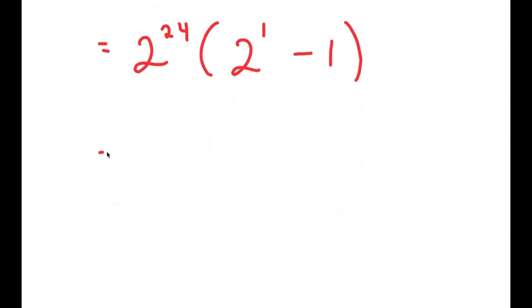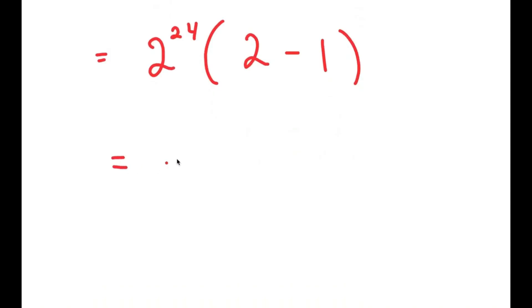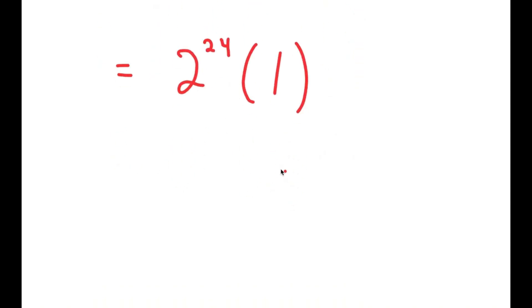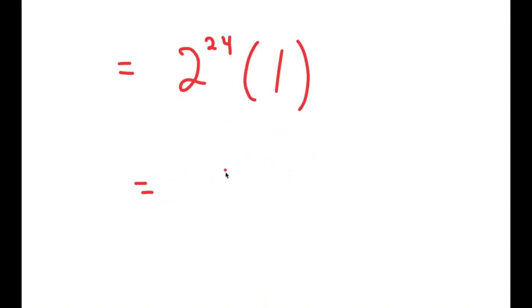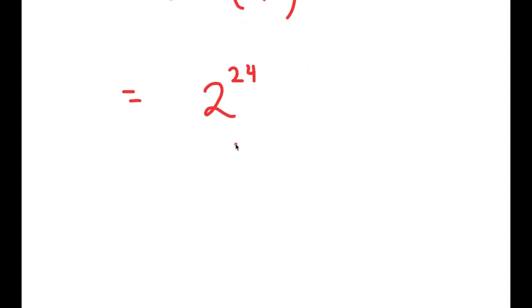So I get 2 to the power of 24 times (2 to the power of 1 minus 1), which is equal to 2 to the power of 24 times 1. And anything times 1 is obviously just equal to itself, so this is equal to 2 to the power of 24.